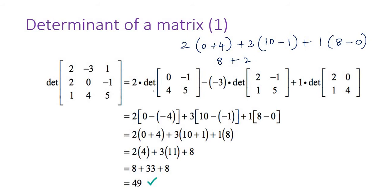There is a mistake here. When I take minus 3: 2 into 5 is 10, then mistakenly I took this — so minus 1 into 1 is minus 1, so this becomes plus 1. So 3 into 11 is 33. I made a mistake, I am sorry. So 1 into 8 is 8. If you add, 41 plus 8 we will get 49.